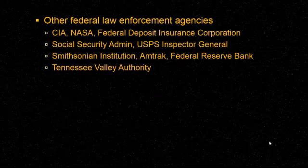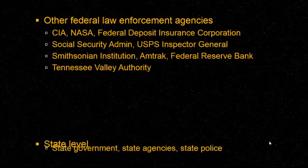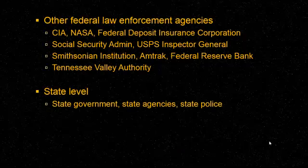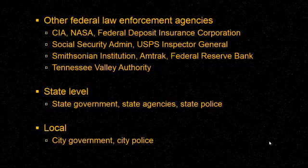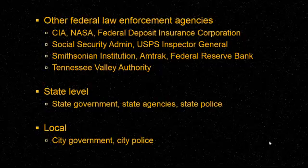Other federal agencies are also given power to enforce some of their own laws, such as NASA, the FDIC, and Social Security. The same structure repeats at the state level — the governor's office can enforce state laws through the police and state agencies. At the local level, the city council passes laws, and it's the mayor who enforces those through the city police.